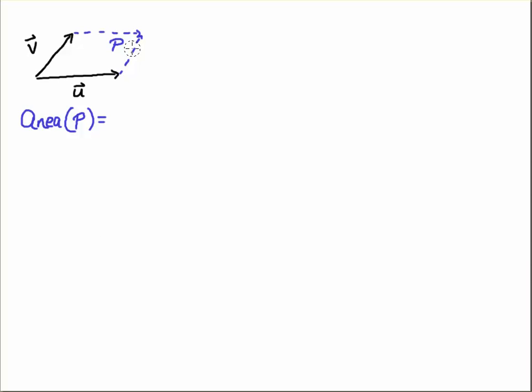Now if we want to calculate the area of P, then what we do is consider the components of u, which are u1 and u2, and the components of v, which we'll call v1 and v2. This is in the plane, so we'll think of this as two-dimensional vectors.